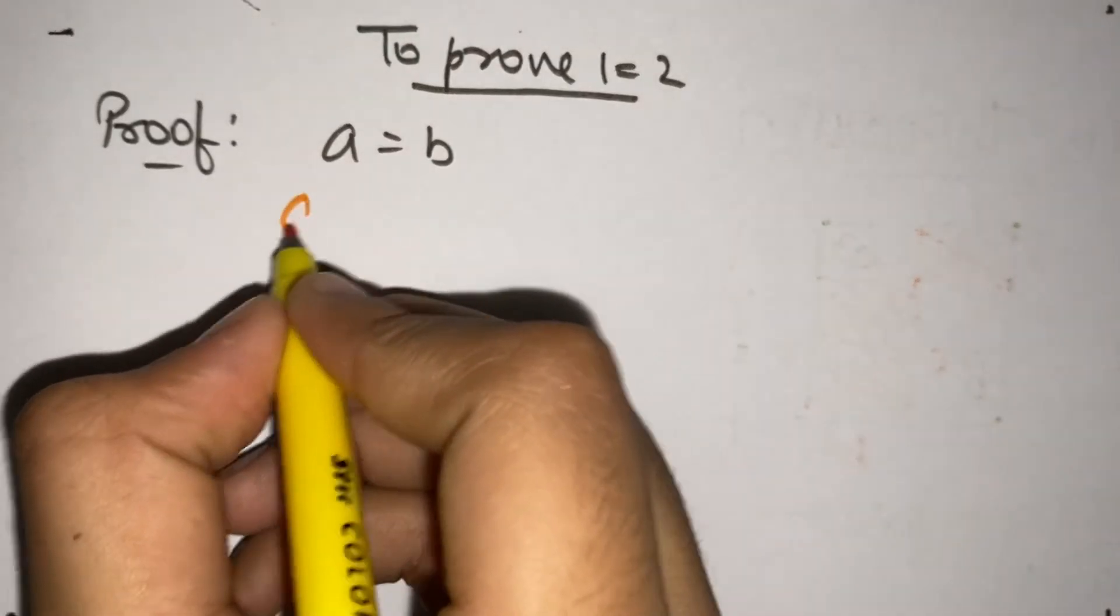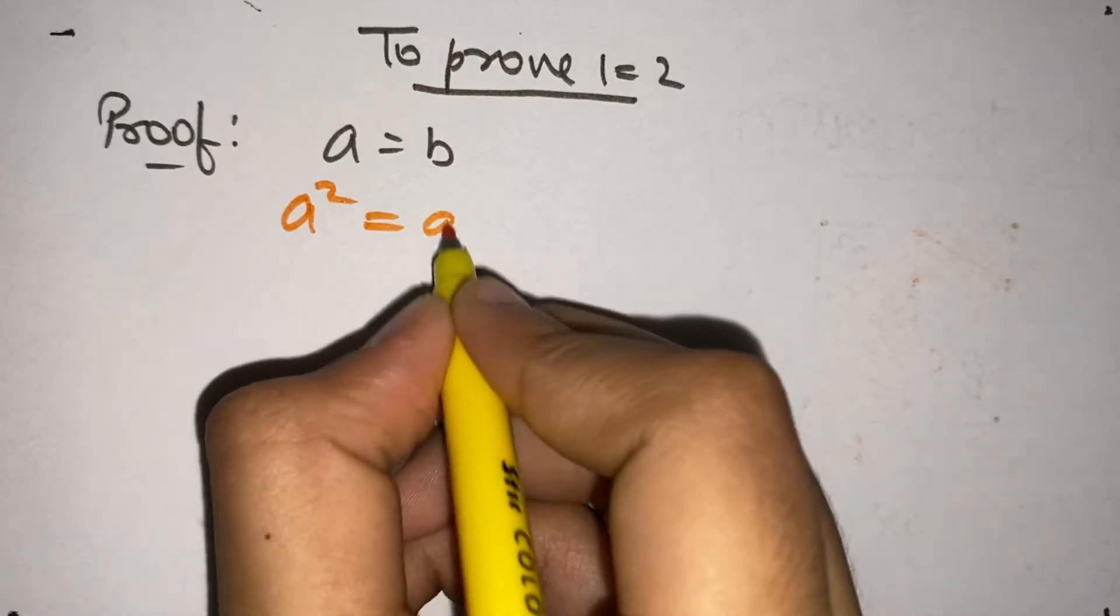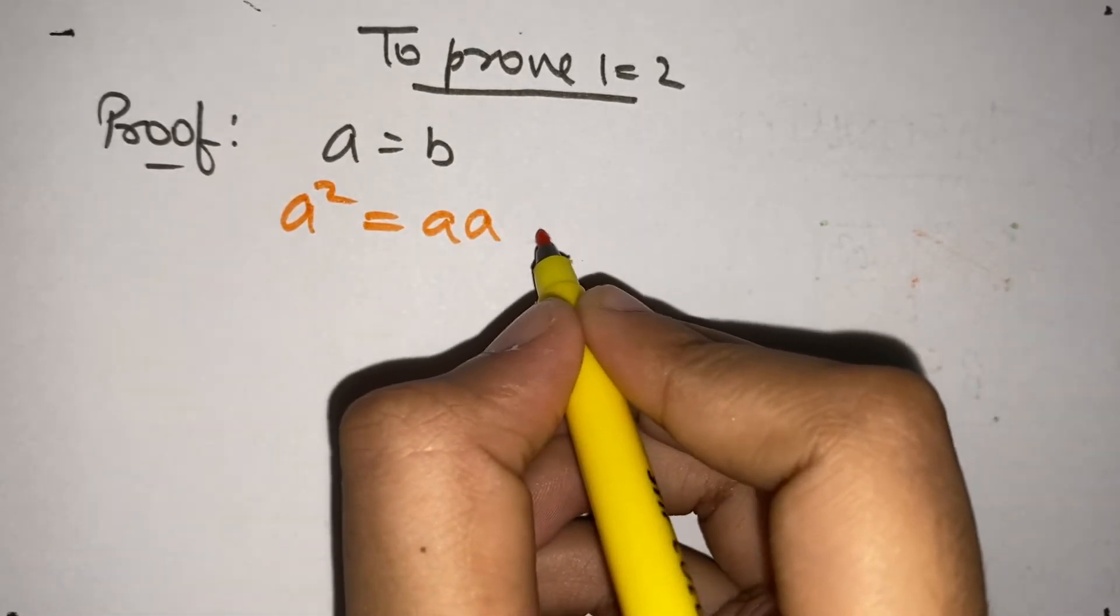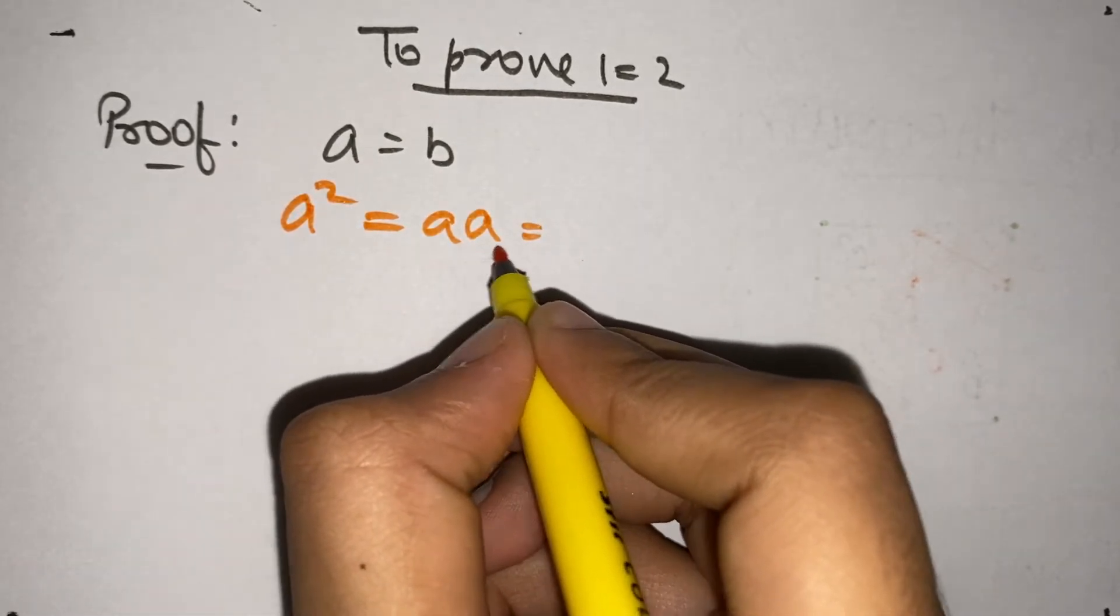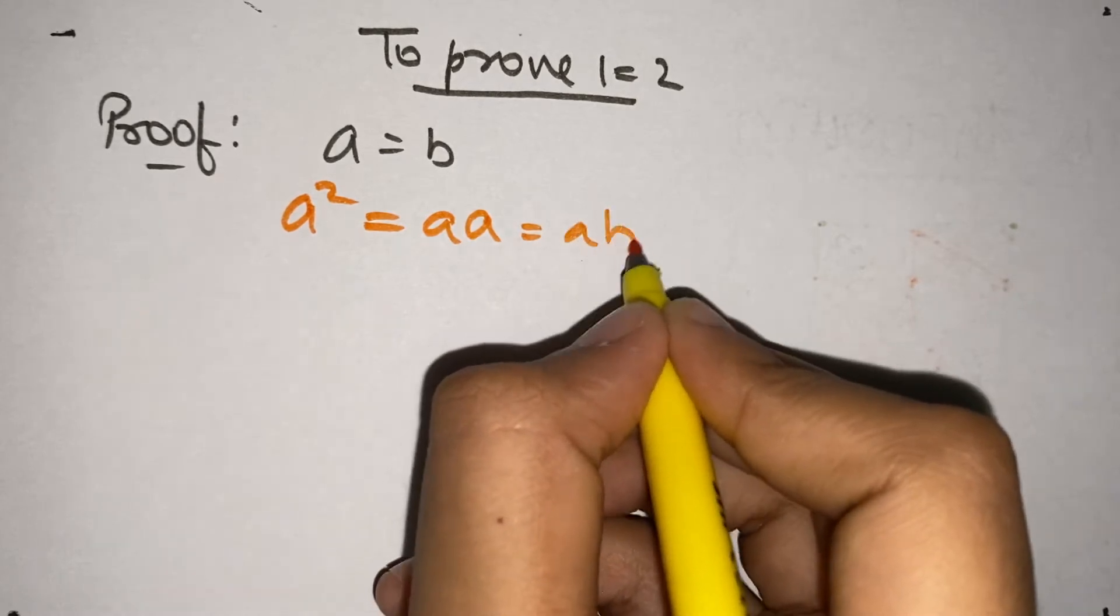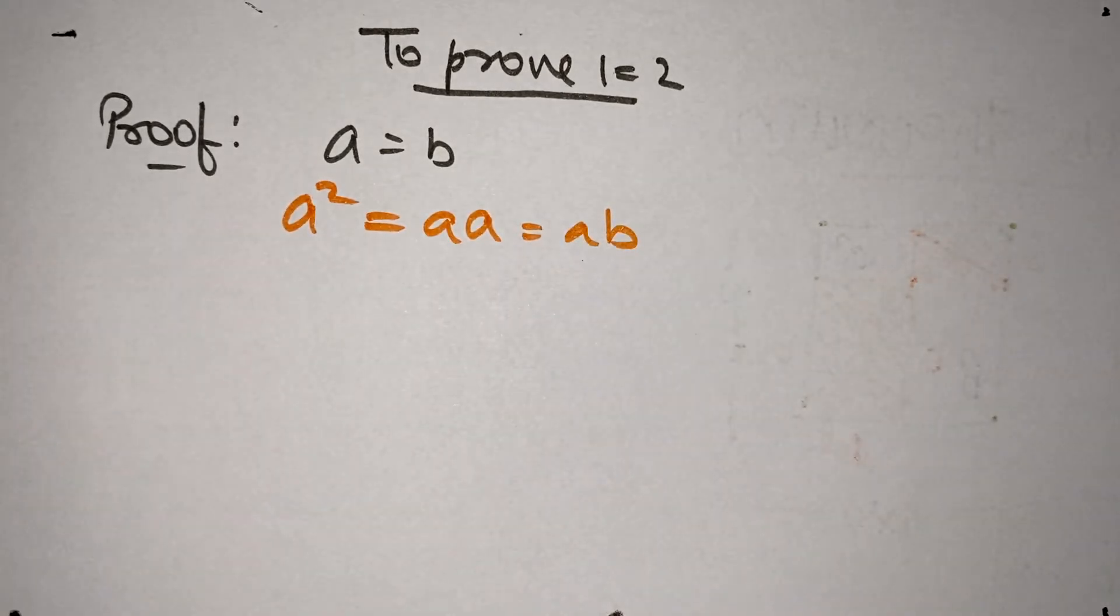If you want to find the square of A, we can write it at A times A, or if we replace one of these A to B, we get AB. So far, so clear.